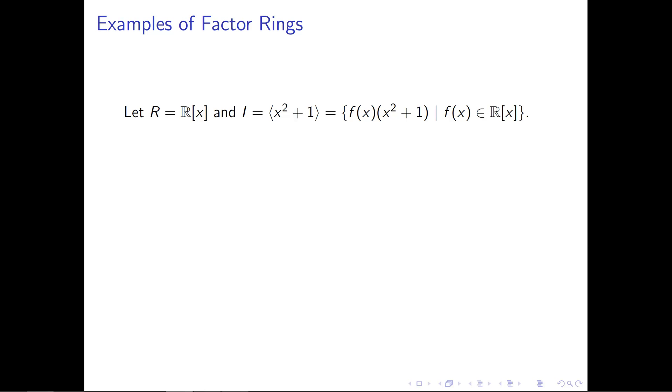So the ring R that I want to take is the polynomial ring with variables in the real numbers, and the ideal I want to take is the ideal generated by x squared plus 1. So what this looks like is it's the set of polynomial multiples of the polynomial x squared plus 1, or maybe in other words, polynomials where I could factor them, and one of the factor terms would be the term x squared plus 1.